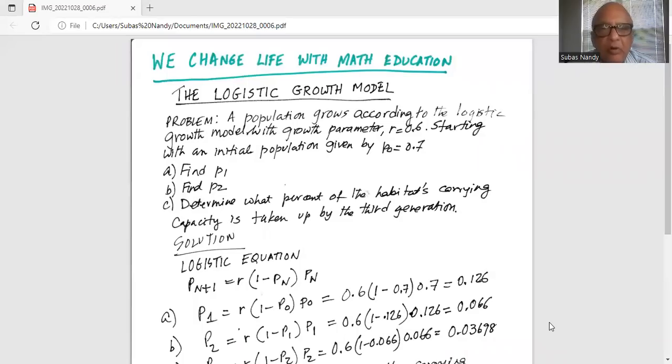The logistic growth model problem. A population grows according to the logistic growth model with growth parameter r equal to 0.6, starting with an initial population given by p sub 0 equal to 0.7. Find p1, find p2, and part c determine what percent of the habitat's carrying capacity is taken up by the third generation.